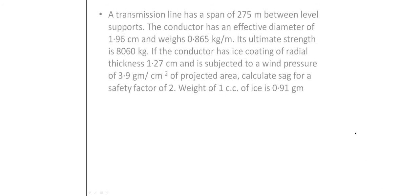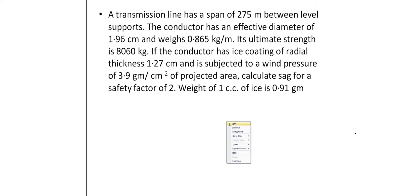In this SAG, it is similar to two poles. We are having a cloth drying analogy. A transmission line has a span of over 275 meters between two supports. We are having two supports, A and B.